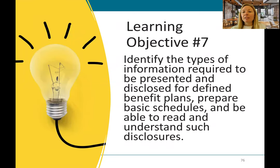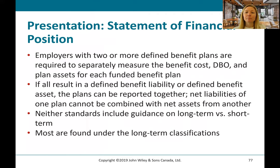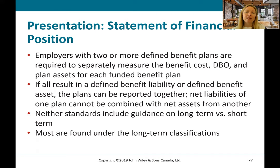Learning objective number seven: identify the types of information required to be presented and disclosed for defined benefit plans, prepare basic schedules, and be able to read and understand such disclosures. Employers with two or more defined benefit plans are required to separately measure the benefit cost, defined benefit obligation, and plan assets for each funded plan. You can't add two plans together.